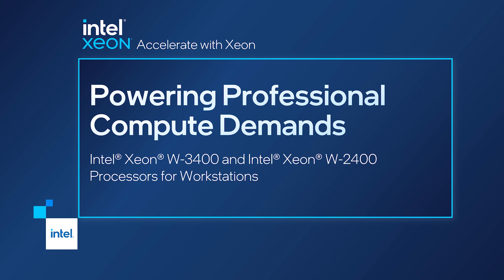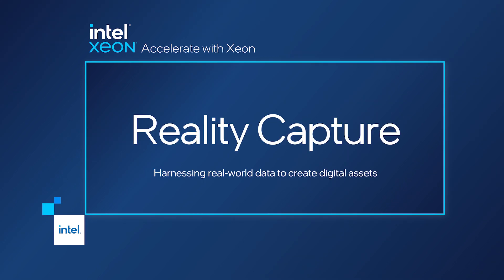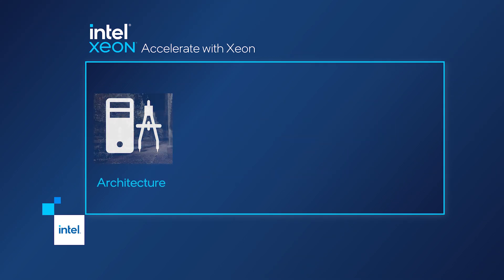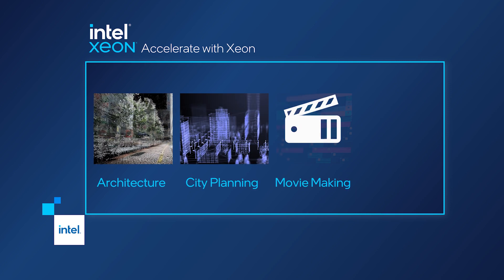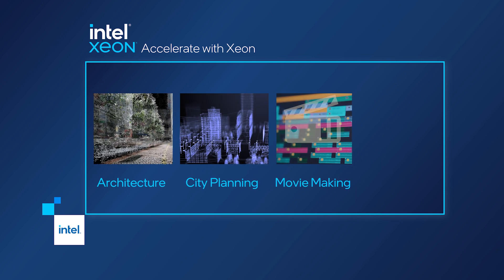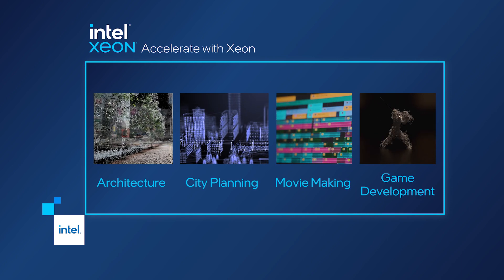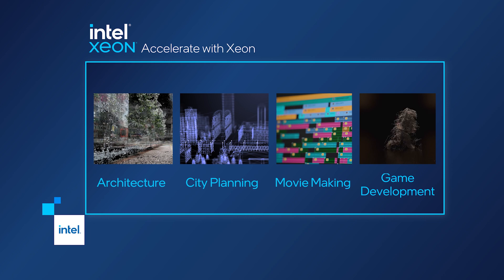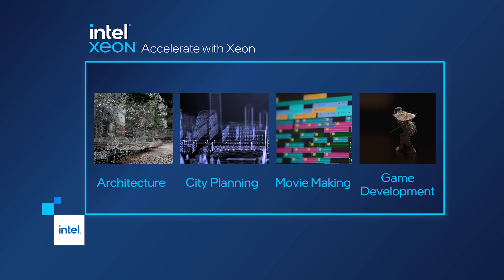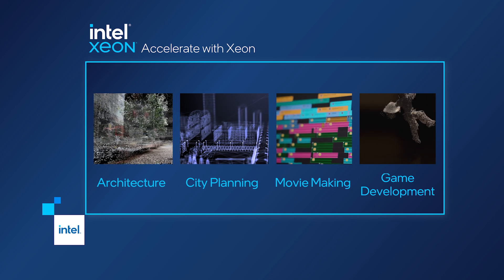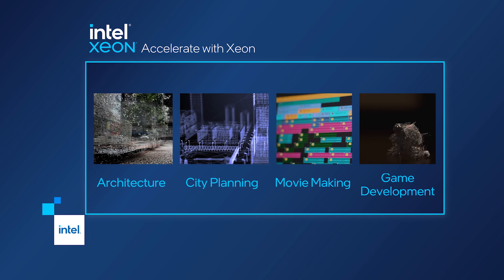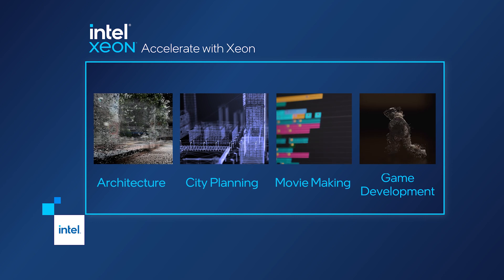Now let's look at our new Xeon W processors in action. We all know that reality capture is becoming ubiquitous in many fields: architecture, city planning, movie making, and game development. These types of workflows highlight the compute power that is required for engineers and creatives to bring their visions closer to reality.